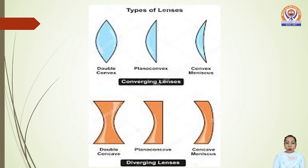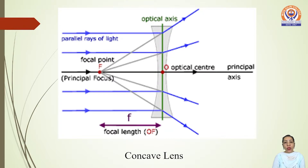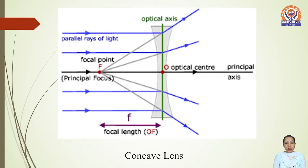Now, what is the focal length? To calculate the focal length, first of all we need to know what is the optical center and what is the principal focus. The optical center is the point of the lens where rays of light pass undeviated. The principal focus is the point on the principal axis where the rays of light meet, or appear to meet, after refraction from the lens.